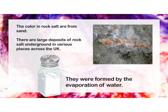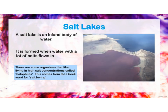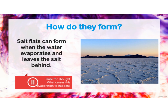Do you know how this rock is formed? It's formed by the evaporation of water. A salt lake is an inland body of water formed when water with a lot of salts flows in. Water evaporates and salt remains on the surface. Salt is extracted from the sea by exposing seawater to sunlight — water gets enough energy, escapes as gas, and the salt is left on the surface. Accordingly, salt is separated from water.